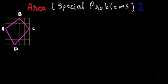Hi, today we have one more problem in which we have to find the area of the quadrilateral ABCD. If we see properly, this quadrilateral is not any regular shape — it is neither a square, nor a rhombus, and it is also not a rectangle. So how do we find the area of this kind of figure?